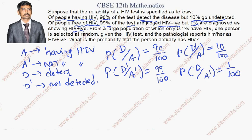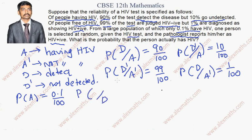From a large population which has only 0.1% having HIV, that is P(A) = 0.1/100. One person is selected at random, given the HIV test, and the pathologist reports HIV positive — meaning the disease is detected. What is the probability that the person actually has HIV?